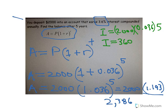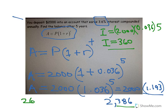Comparing simple versus compound interest: with simple interest you'd earn $360, but with compound interest you earn $386 — a difference of $26. That might not seem like much, but over more years or at a higher interest rate, the difference grows a lot faster.